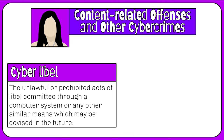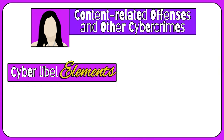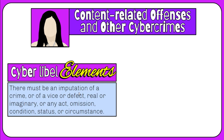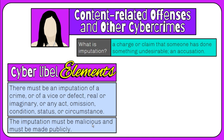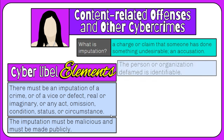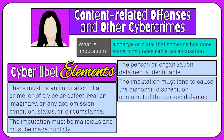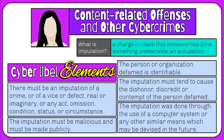Next is cyber-libel — the unlawful or prohibited acts of libel committed through a computer system or any other similar means. The elements of cyber-libel are: there must be an imputation of a crime, vice, defect, real or imaginary, or any act, omission, condition, status, or circumstance; the imputation must be made publicly, requiring at least one other person to have seen the libelous post; the imputation must be malicious, meaning the author knew it was false; the person or organization defamed is identifiable; the imputation must tend to cause dishonor, discredit, or contempt; and it was done through a computer system or any similar means.